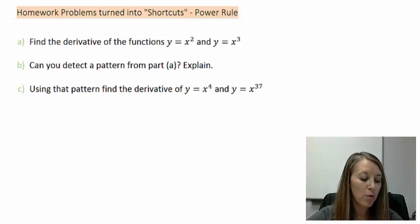In the first part we want to find the derivative of y equals x squared and of y equals x cubed. Hopefully from those two pieces you can detect a pattern, and then from that pattern you can find the derivative of y equals x to the fourth, and quite a big jump here, y equals x to the 37th.